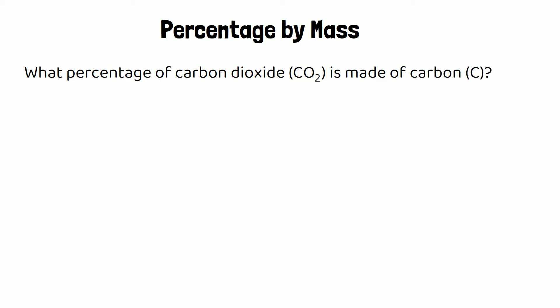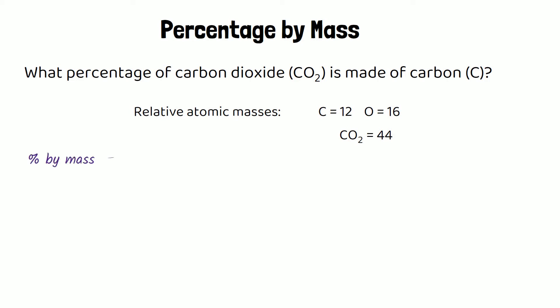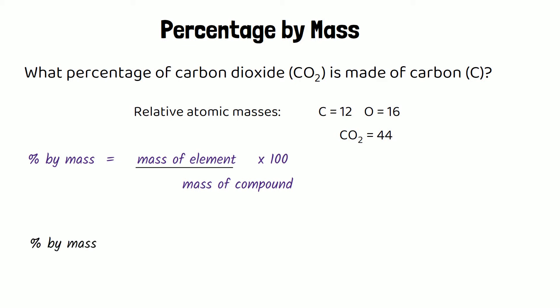To work this out, you need the relative atomic masses of all the elements in the compound and the element you've been asked about, and also the relative formula mass of the compound. We use the equation: percentage by mass equals the relative atomic mass of the element you've been asked about, divided by the relative formula mass of the compound, times by 100 to make it into a percentage.